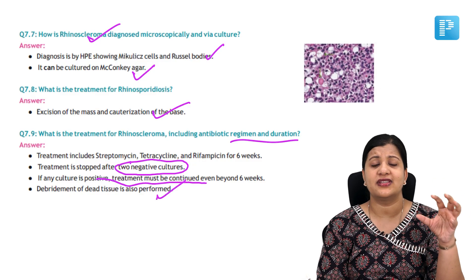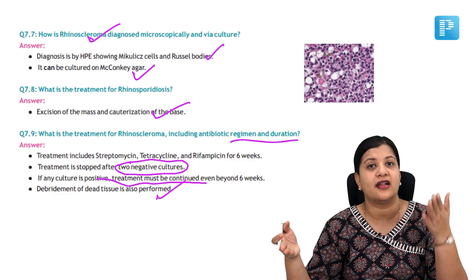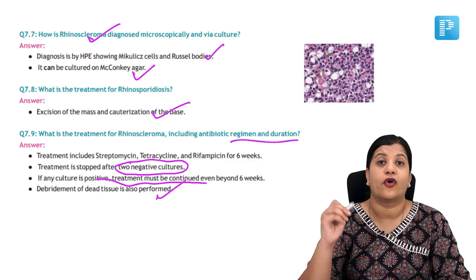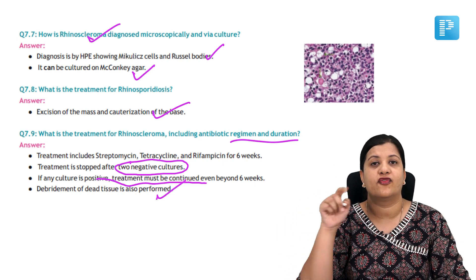Debridement of tissue is also performed. These questions are very specific — there is no beating around the bush. There is a particular point that needs to be tested and recalled. If you are not able to recall it, mark that and revise it later. I hope this was helpful for you to understand how, on a small topic like rhinosporidiosis and rhinoscleroma, we quickly recalled the most important exam-based MCQ questions in various formats — making you prepared and confident for your final exams. Take care and thank you.